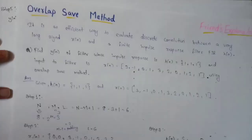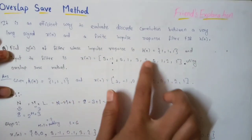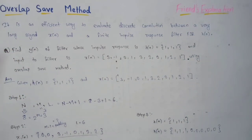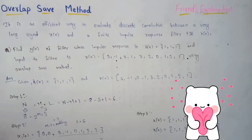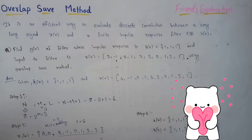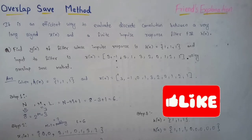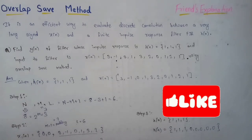We have successfully convolved the long signal with the small impulse response — that's how the overlap save method works. If you understood this lecture and found the explanation helpful, don't forget to click the like button. I'm sorry my voice isn't great today. Thanks for watching, and subscribe to the channel if you are new — you'll find more amazing videos in the future!